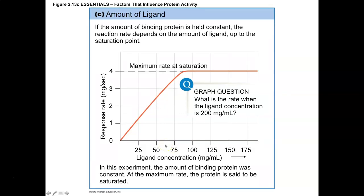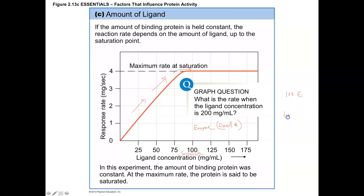But when you get to a point where you run out of enzyme — if you're not adding any more enzyme into the reaction — then no matter how much more substrate you add, if the enzyme is a fixed amount, the response rate is going to plateau. If I have 100 enzymes and 1,000 substrates, you can only interact with 100 substrates at a time. You've reached a point of saturation, limited by the amount of enzyme available.